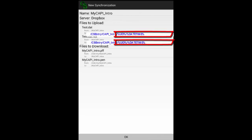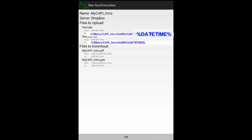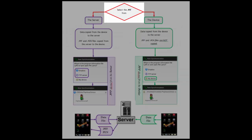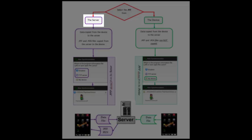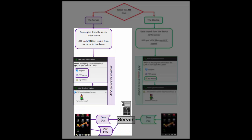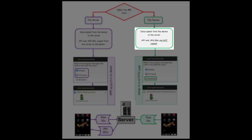Appending %UID%/%DATETIME% to the path prevents the overwriting of files if multiple users use the synchronization. %UID% is a replaceable parameter which will show the user ID. %DATETIME% is a replaceable parameter which will show a string containing the date and time. If you select the .pff file from Dropbox or from an FTP server, the data will be copied from the device to the server, and the .pff and .pen files will be copied from the server to the device. If you select the .pff file from the device, data are copied from the device to the server, and the .pff and .pen files are not copied.